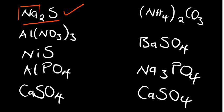The second one: aluminium nitrate. Again, rule number 1 — all group 1, all nitrates, and all ammonium salts are soluble. So aluminium nitrate is also soluble.